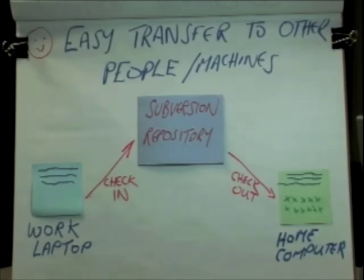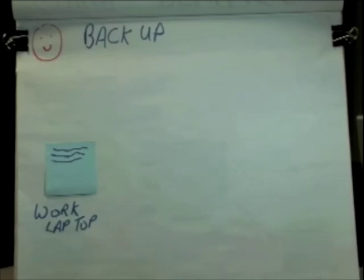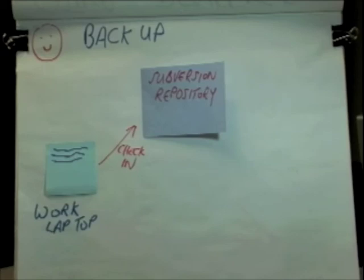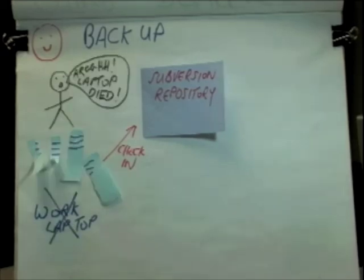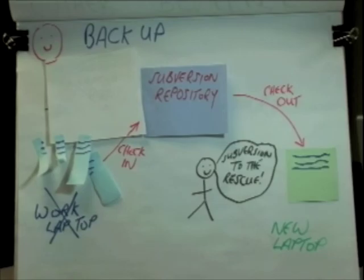Then at home, let's say I make a change to a file. I can then check that into the repository, and when I'm next at work, I can update the version on my work laptop. So Subversion makes it easy for different machines to all have the most up-to-date version of a set of files. Does Subversion let you do anything else? Well, it's a great backup facility. Let's say you have code on your work laptop, and because you're smart, you've checked it into the Subversion repository. And then your laptop dies. But you're not worried at all, because Subversion can come to the rescue. All you need to do is to check out the code onto a new machine, and you're ready to go.